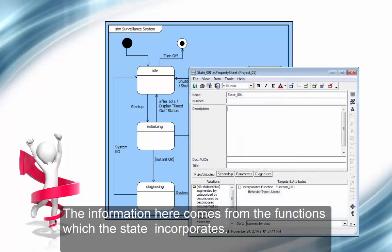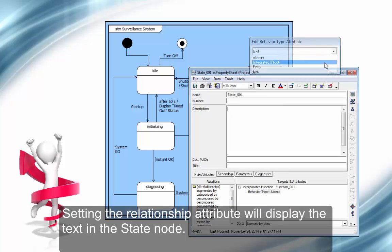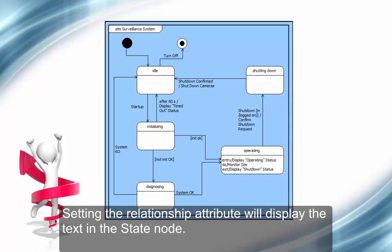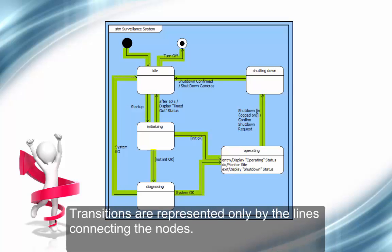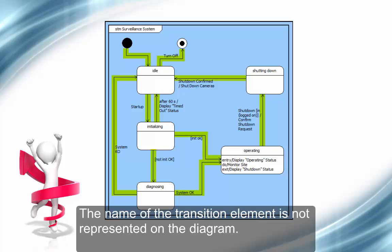The information here comes from the functions which the state incorporates. Setting the relationship attribute will display the text in the State node. The lines between states are transitions. Transitions are represented only by the lines connecting the nodes. The name of the transition element is not represented on the diagram.